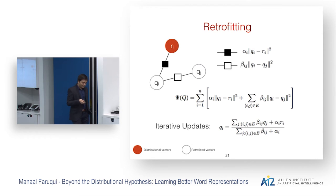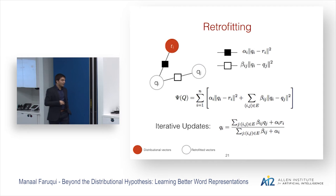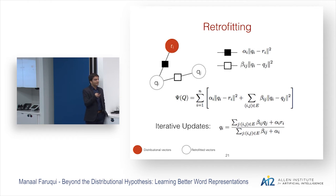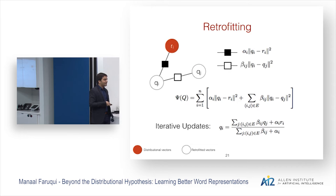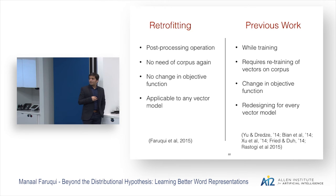This is a convex objective function to minimize. You take the derivative with respect to the parameter qi and equate it to zero. You get an iterative update where at every time step, retrofitting tells a vector qi to become closer to its neighbors in the graph — it's just the weighted sum of neighboring vectors. You keep doing that until convergence, until no longer you see that you are changing.